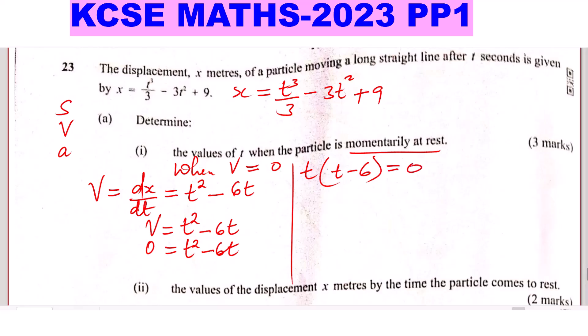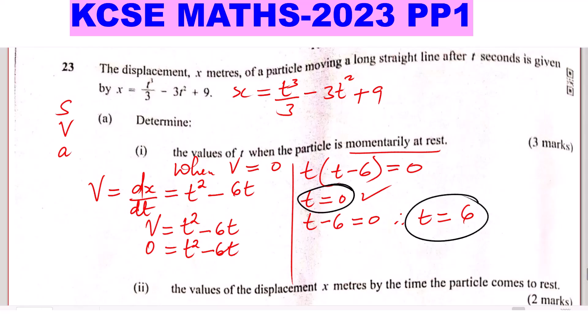So you get two values of t. t equals 0, or t minus 6 equals 0, which gives t equals 6. So the values of t when the particle is momentarily at rest are t equals 0 seconds and t equals 6 seconds.